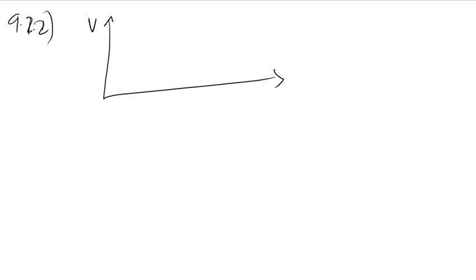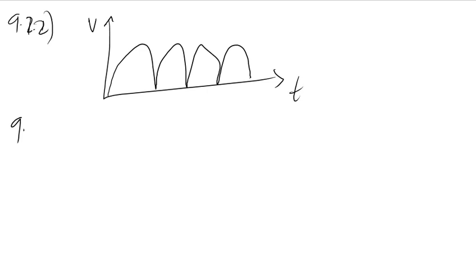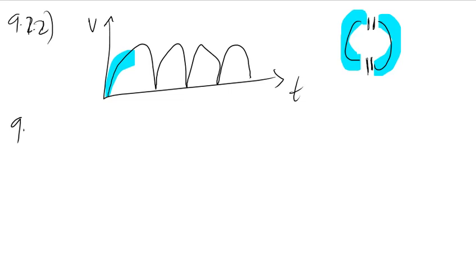They want an induced EMF versus time graph. The voltage is on this side and time on this side. For DC with split rings, it conducts and then stops — conduct, stop, conduct, stop. It doesn't conduct all the way because it's split. They already drew the graph for you.